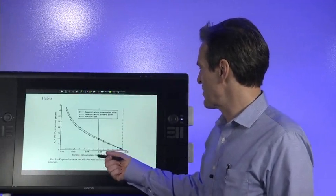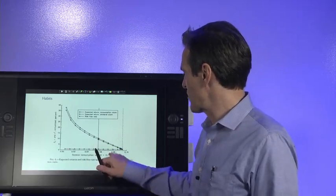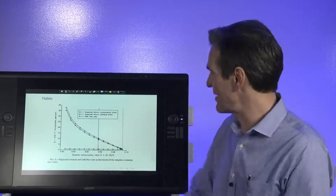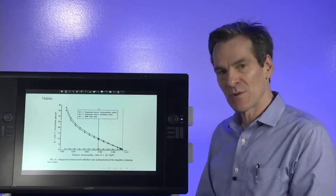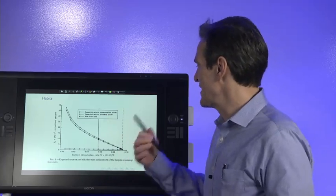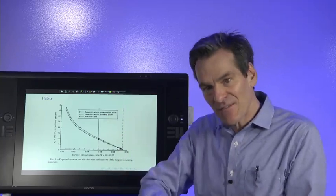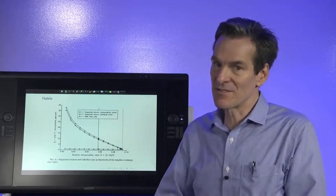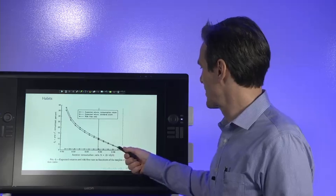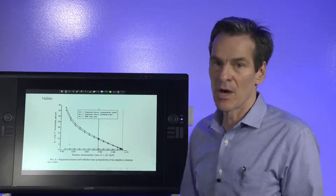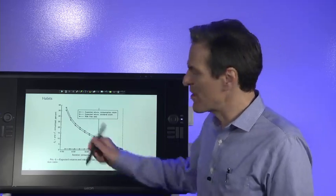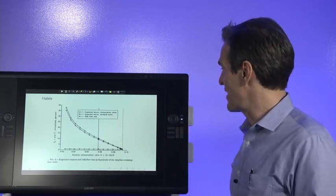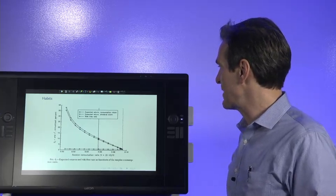Here is expected returns. As the surplus consumption ratio declines, as consumption falls relative to habit, expected returns rise. That's exactly what we're looking for. We're seeing the risk premium rise in bad times. Prices fall. Expected returns rise. You can see we're going to get the regressions to work out. The risk free rate doesn't do anything. The model was set up to have a constant risk free rate. So we have the risk premium rising in bad times as prices fall in bad times.